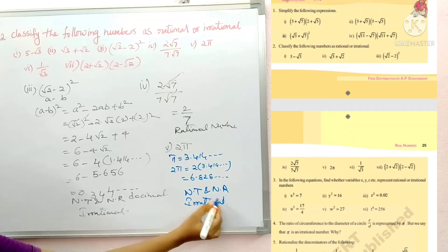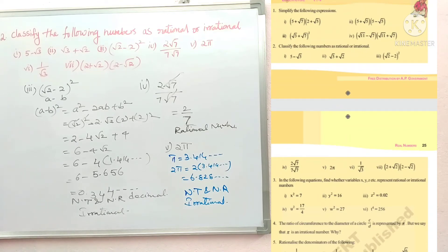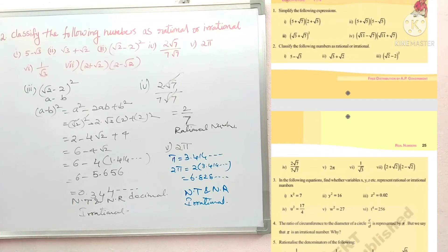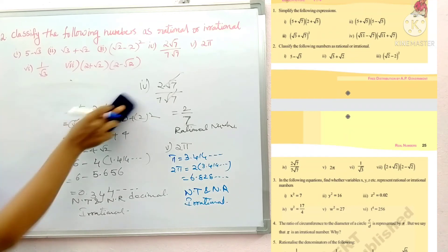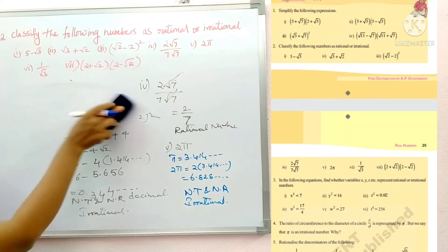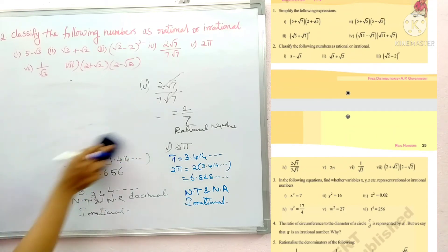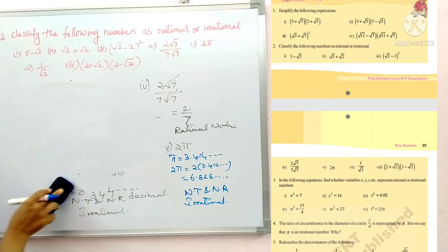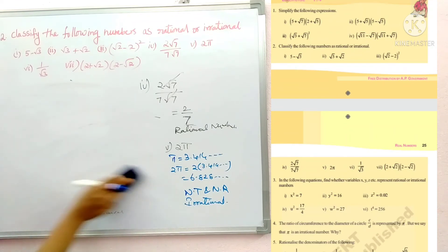I think you are following, students — this is very easy. A video link about rational and irrational numbers will also be in the description. Our sixth problem: 1 by root 3. Root 3 is irrational, so dividing 1 by an irrational number is also irrational.